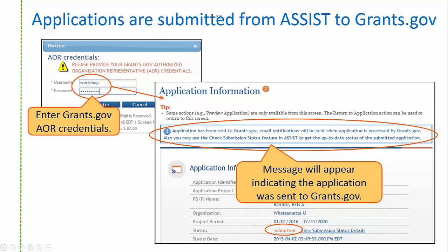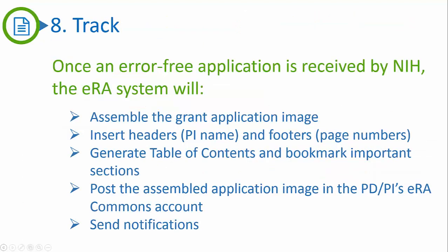Remember, there are eight steps, not seven — you're not done yet. The eighth and final step is to track your submission. Our eRA systems are constantly polling Grants.gov for submitted applications to process. We take all your application forms and attachments and assemble them into an application image in PDF format, complete with headers, footers, a table of contents, and bookmarks. We post that assembled application image in the PDPI's eRA Commons account, and along the way we send multiple notifications to the email addresses listed on the SF-424 R&R form.